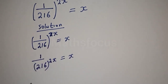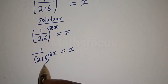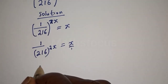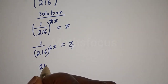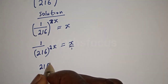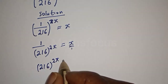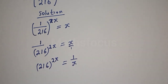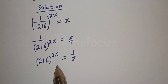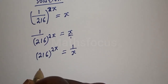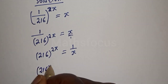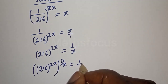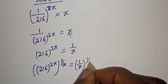Let's find the reciprocal of this. So we have 216 raised to the power 2x is equal to 1 over x. At this point we can multiply the exponents of both sides by 1 over x — that is, 216 raised to the power 2x, multiplied by 1 over x, is equal to 1 over x multiplied by 1 over x.